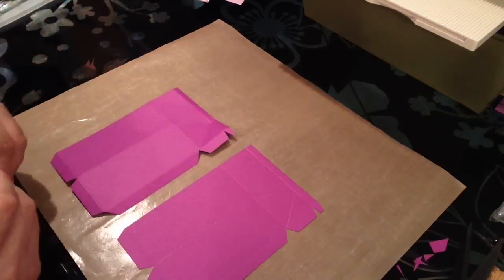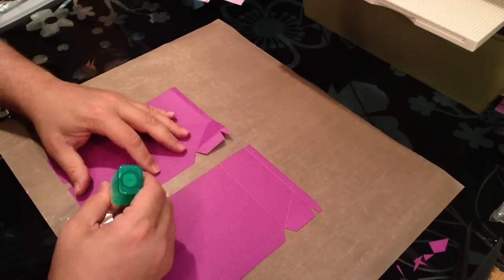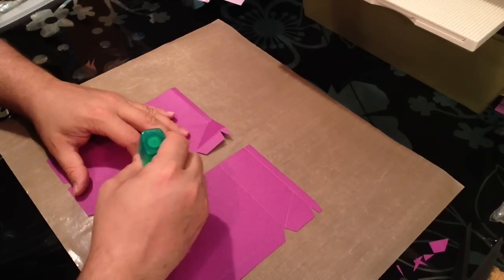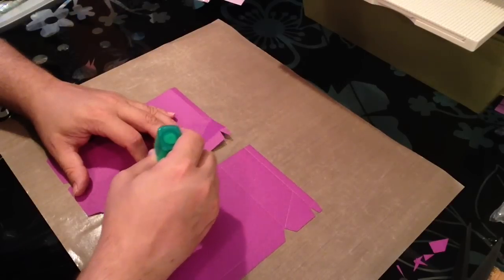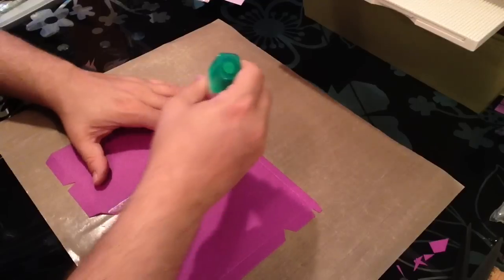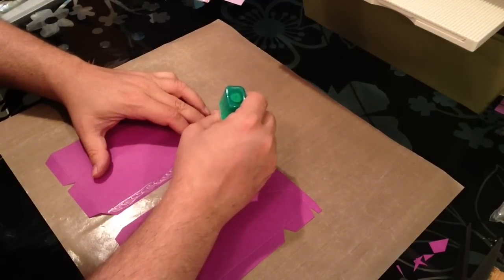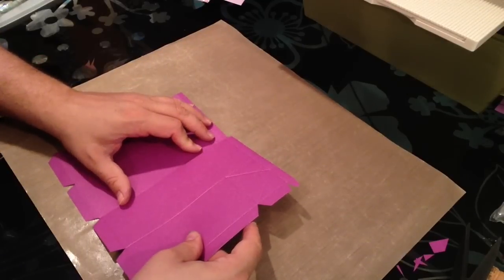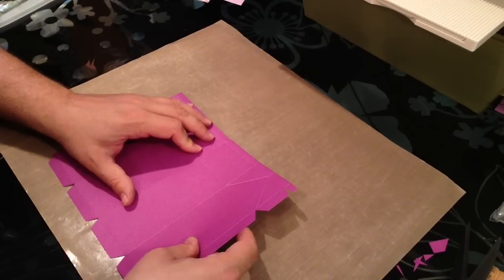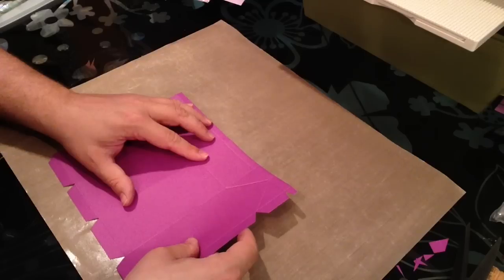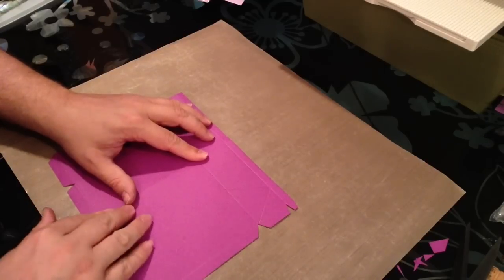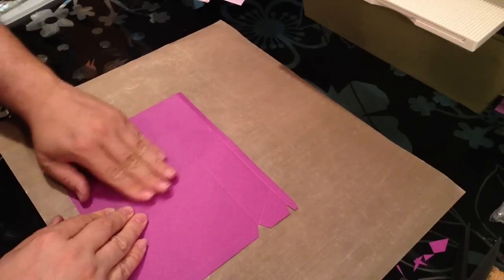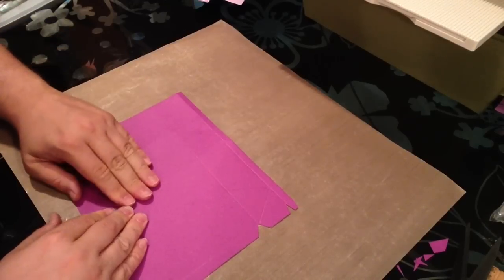Now we want to take some glue and I'm going to use Tombow mono multi glue. I like liquid glue for this because it is a box and if it's going to hold something that's got some weight to it you want some strength. I'm putting glue just along those sides. I'm going to line up my one half that doesn't have the tabs with the tabs I just put the glue on, press that down nice and firm. Give it a few seconds to dry, the Tombow glue dries pretty quickly.